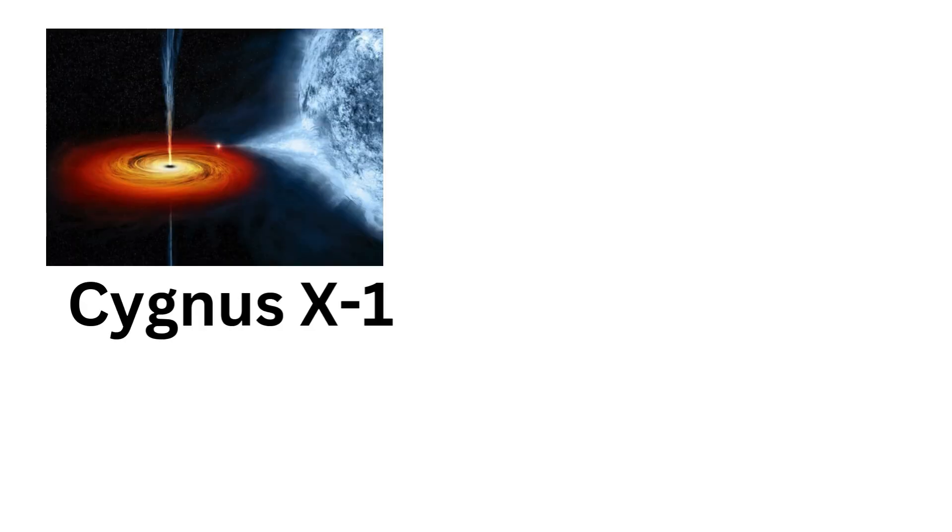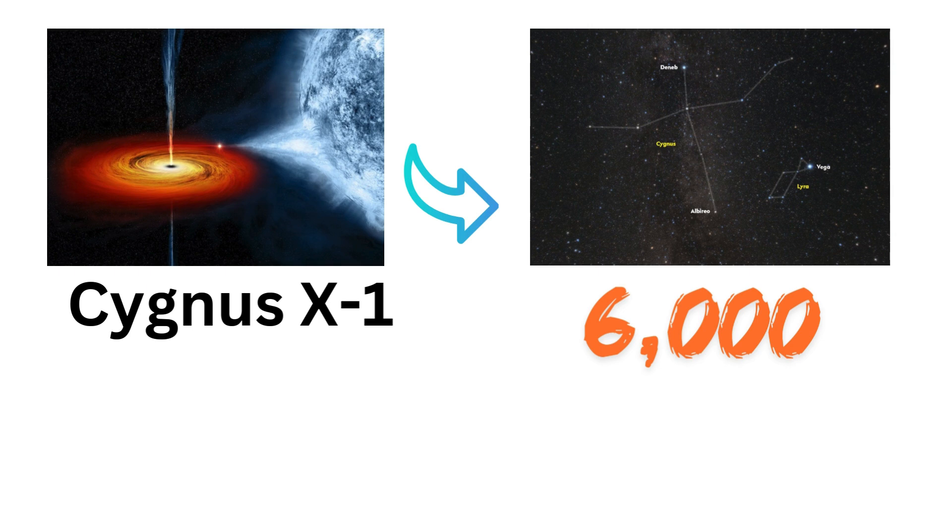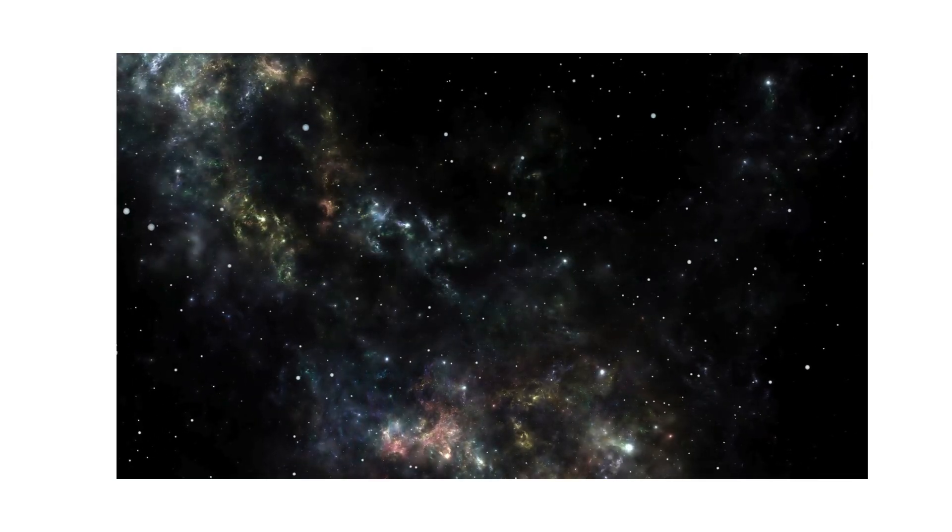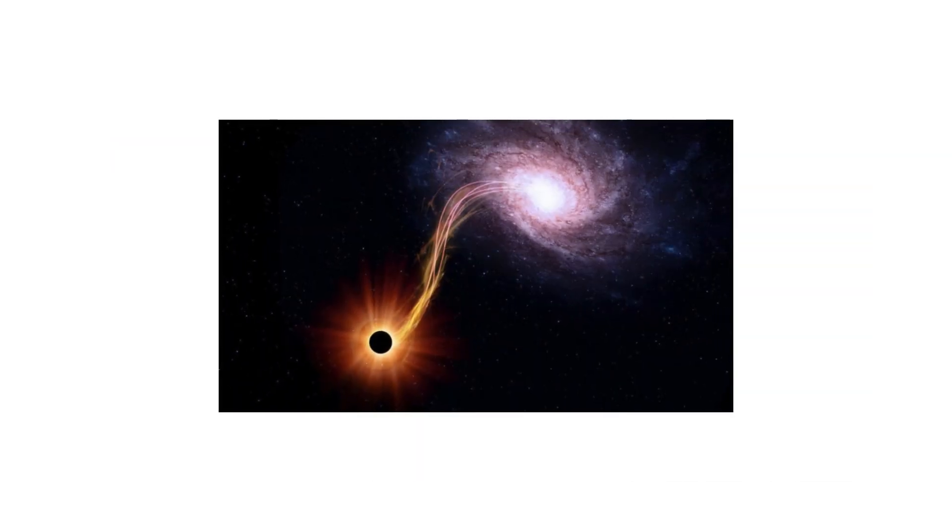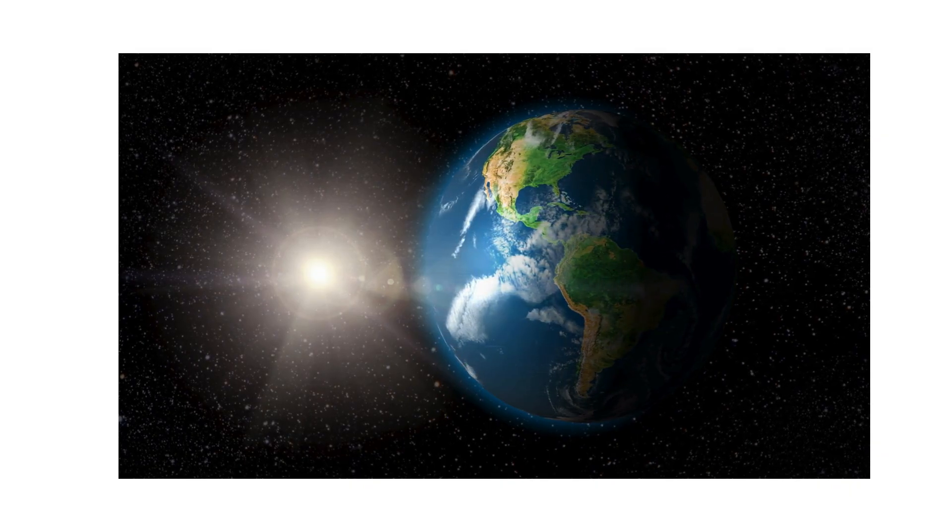Cygnus X-1 is a prime example. It lies about 6,000 light years away in the constellation Cygnus. It is actively pulling matter from a nearby blue supergiant star. As this material falls into the black hole, it produces powerful x-ray emissions. At its present distance, the radiation does not affect Earth.